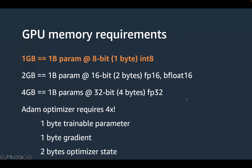First, to understand the problem: these models are getting humongous. 1 billion parameters at 8-bit quantization requires 1 gigabyte of RAM. At 16-bit or full 32-bit, which is the default if you don't quantize, you need basically 4 GB of RAM just to load a 1 billion parameter model. Not even to train it — training also involves temporary variables, activations, and optimizer state, which can be another 4 to 12 times as much. So you need a massive amount of GPU memory.